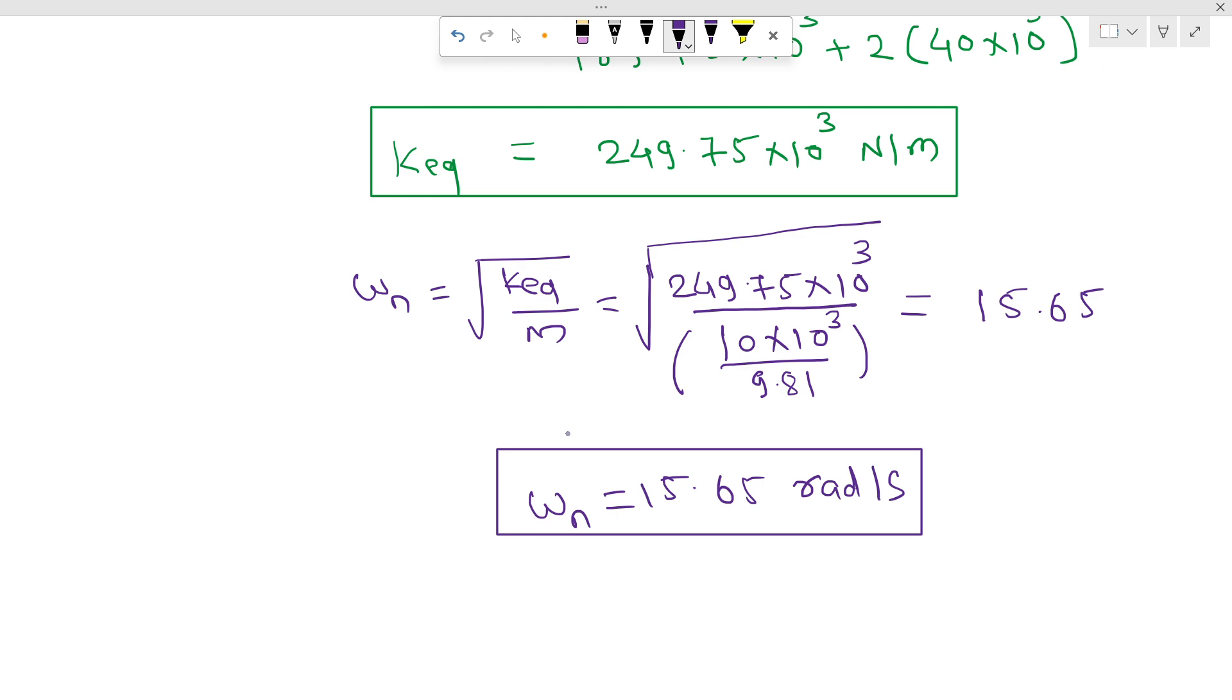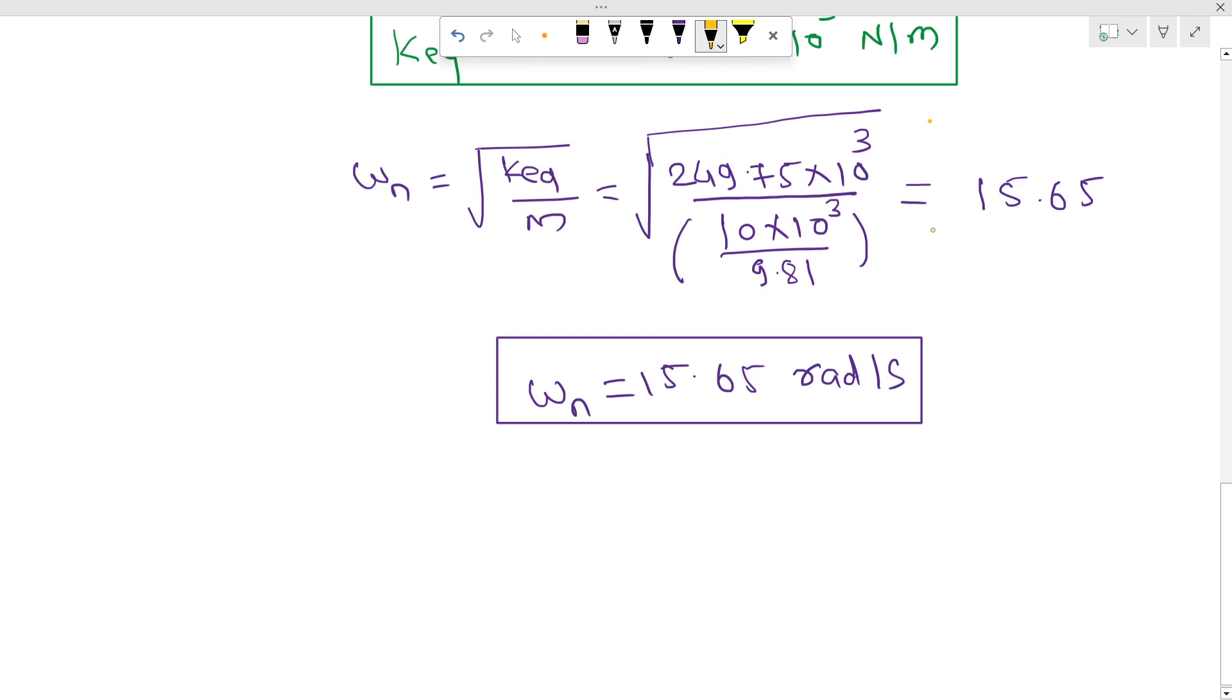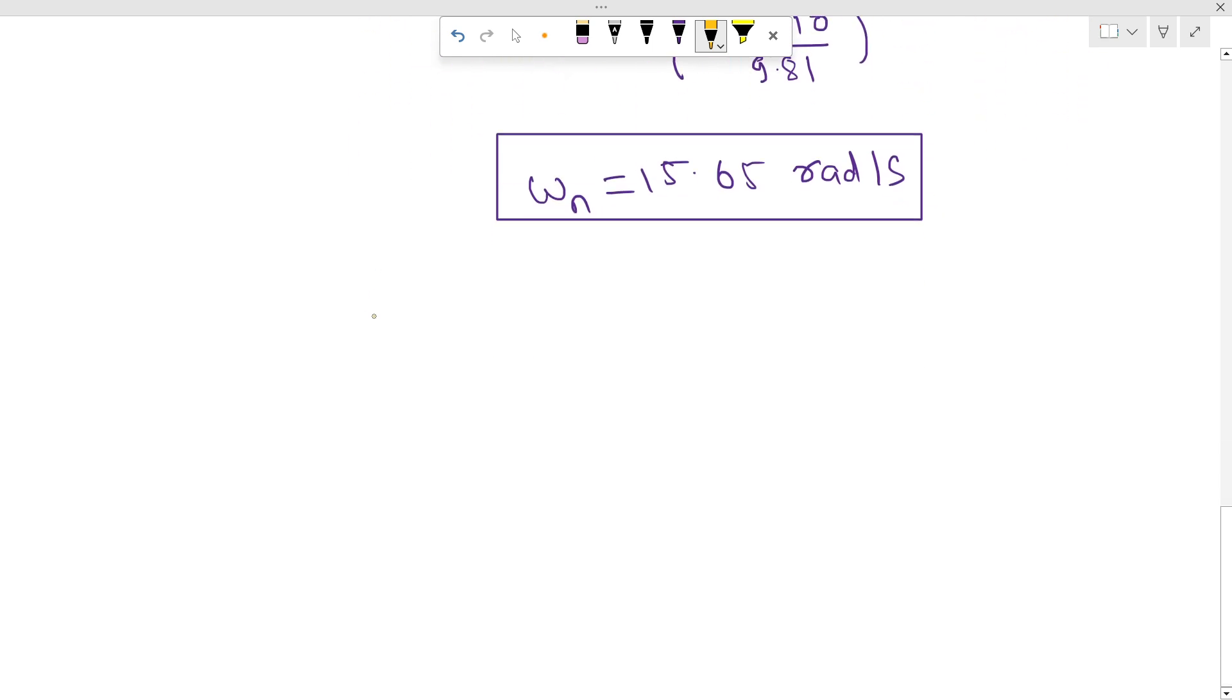Now finally we will need to find out the time period. So the time period Tn equals 2π upon omega n, which equals 2 times 3.14 divided by 15.65. So we can write, first I will do it on calculator, 0.40 seconds.